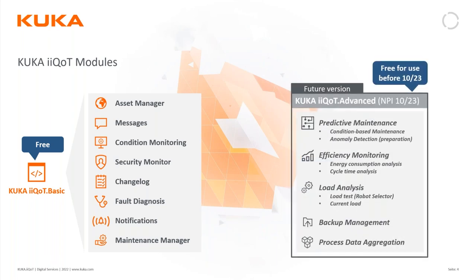We are planning to increase the functionality of IQOT and add new modules during the coming year. These include predictive maintenance, efficiency monitoring, load analysis, backup management, and process data aggregation. Process data aggregation is how you quality-monitor your production — you can use your own defined variables or quality variables captured from the robot process and monitor them inside IQOT.